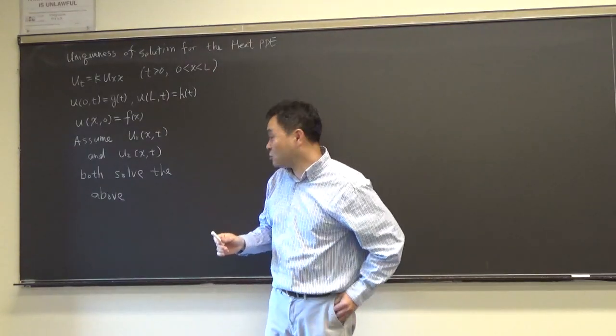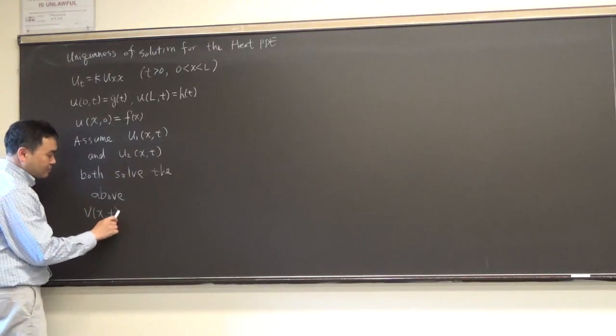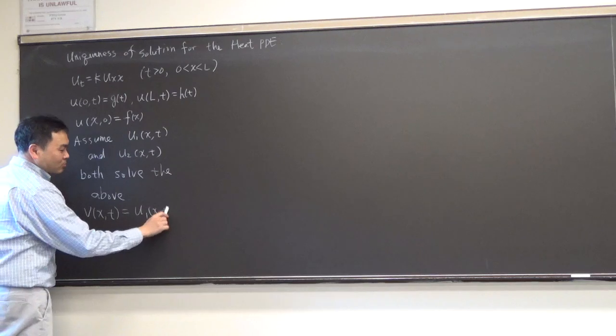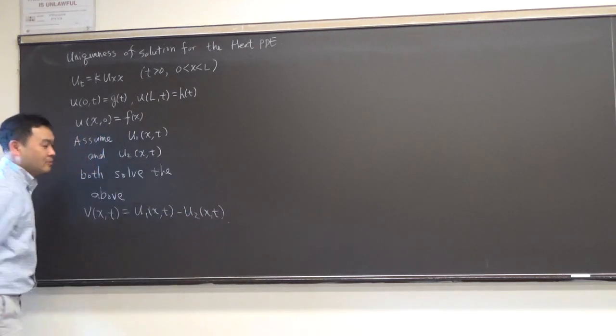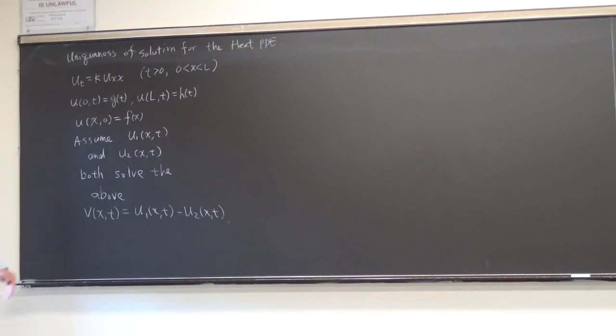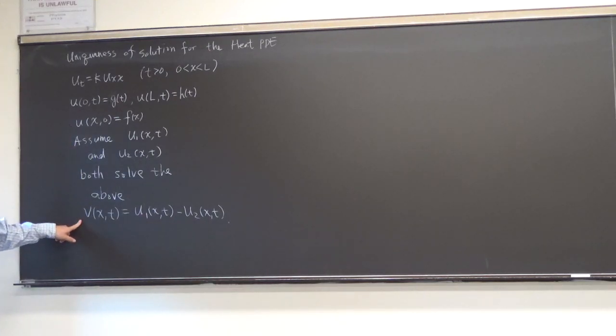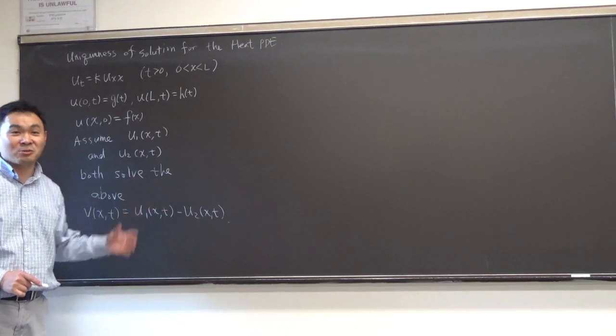Then what we do is we set v(x,t) as the difference between the two functions. And to show that these two are equal, we have to show that v(x,t) must be zero. Always zero. If v is always zero, then this and this has to be equal. That's how you do it.